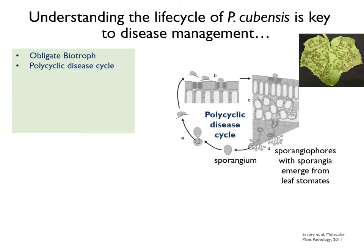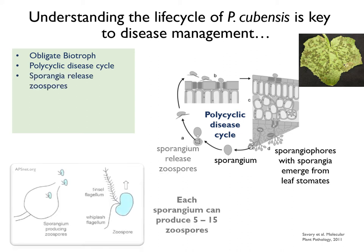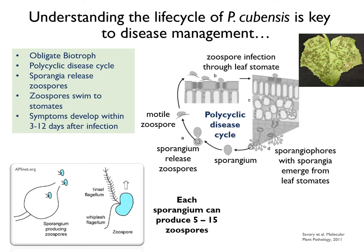P. cubensis has a polycyclic disease cycle, producing numerous sporangia that can be carried to nearby leaves on air currents. However, sporangia only serve as a vehicle. Each individual sporangium can release 5 to 15 zoospores on the leaf. Zoospores are motile spores that actually swim to natural openings called stomates on the leaf surface to infect the plant. This is why oomycetes are often referred to as water molds, since water plays a critical role in their life cycle.